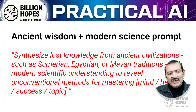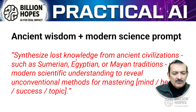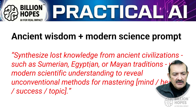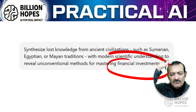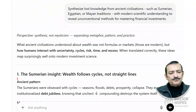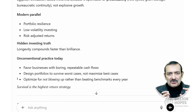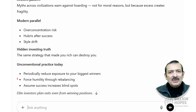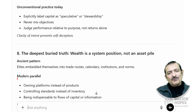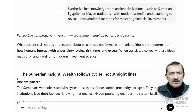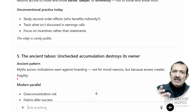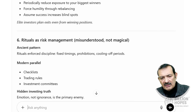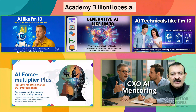There is one more — the ancient wisdom and modern science prompt. We want to synthesize lost knowledge from traditions like Sumerian, Egyptian, and Mayan, and apply it to a particular topic. I chose financial investments: 'Make me a master of financial investment using ancient wisdom and modern scientific knowledge.' The output was amazing — wealth follows cycles and not a straight line. All of us want to be financially independent, and LLMs can help us get insights. But if you just prompt 'make me super rich,' it will make a fool out of you. Always prompt it in a manner that a roadmap and insights can be created. Remember: LLMs are not financial advisors.